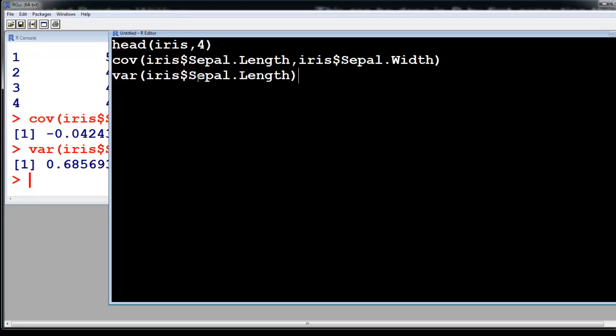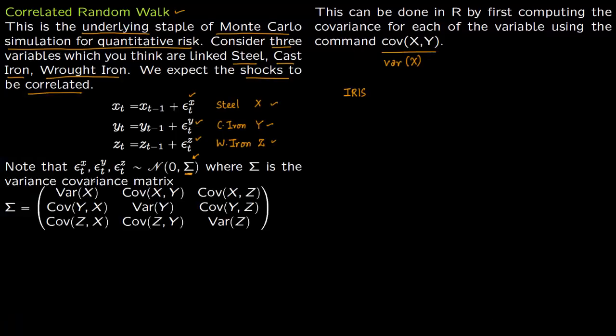You have all these values and you can plug them in right here. You plug those values which you get, variance and covariance, right here. Once you plug them in here, you get a variance covariance matrix and this is what we are going to use in R to simulate a correlated random walk.